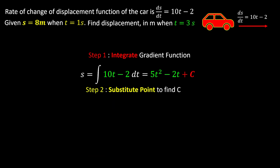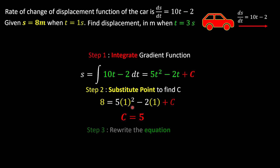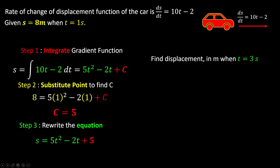Now that we found c equals 5, we rewrite the displacement equation as s equals 5t squared minus 2t plus 5. Finally, to find the displacement when t equals 3 seconds, we substitute t equals 3 into the equation, and we find the displacement is 44 meters. We are done.